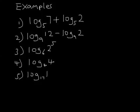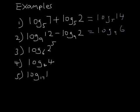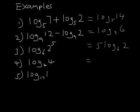Here are some examples to simplify. For log to the base 5 of 7 plus log to the base 5 of 2: 7 times 2 is 14, so the answer is log to the base 5 of 14. For log to the base 9 of 12 minus log to the base 9 of 2: divide 12 by 2 to get log to the base 9 of 6. For the power rule example, the power comes outside to give 5 log to the base 6 of 2. Log to the base 4 of 4 equals 1, and log to the base anything of 1 equals 0.